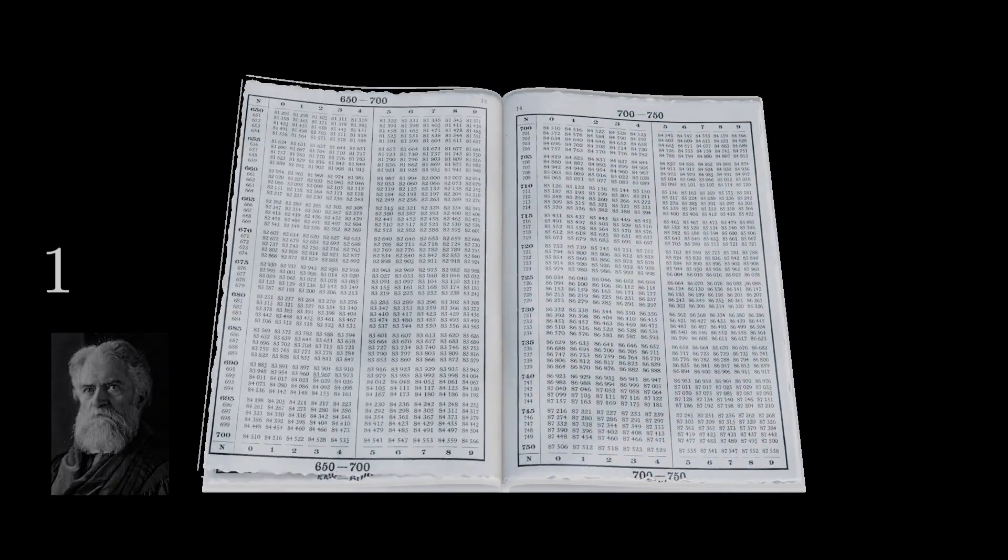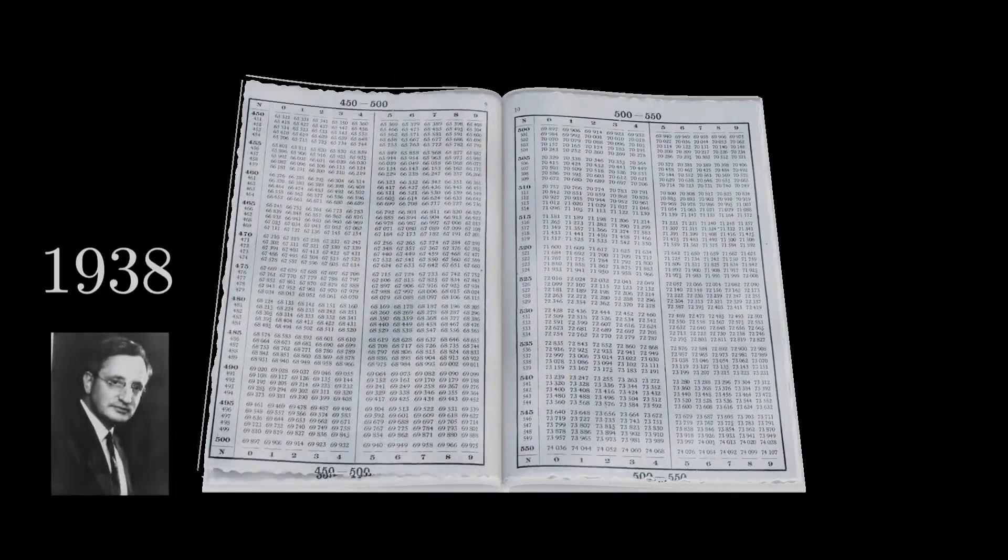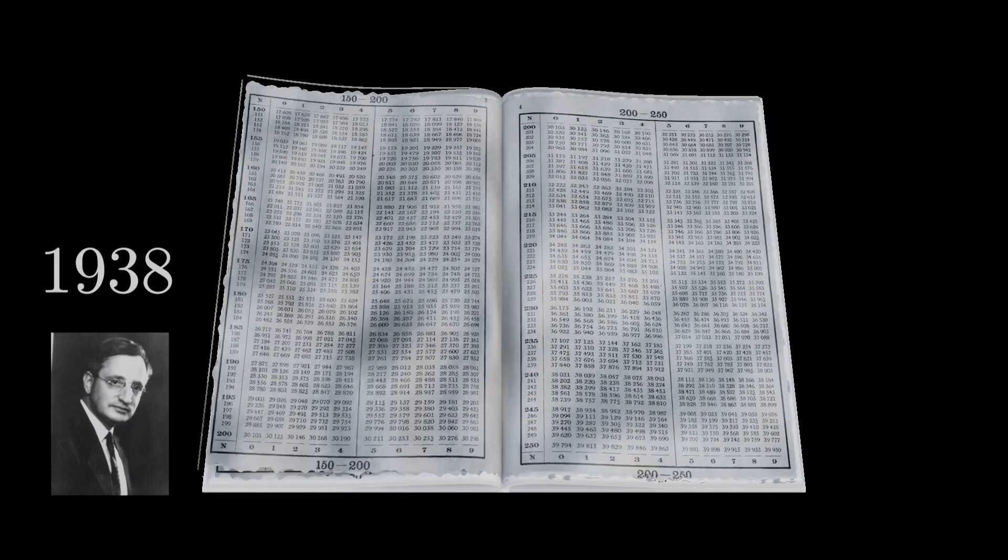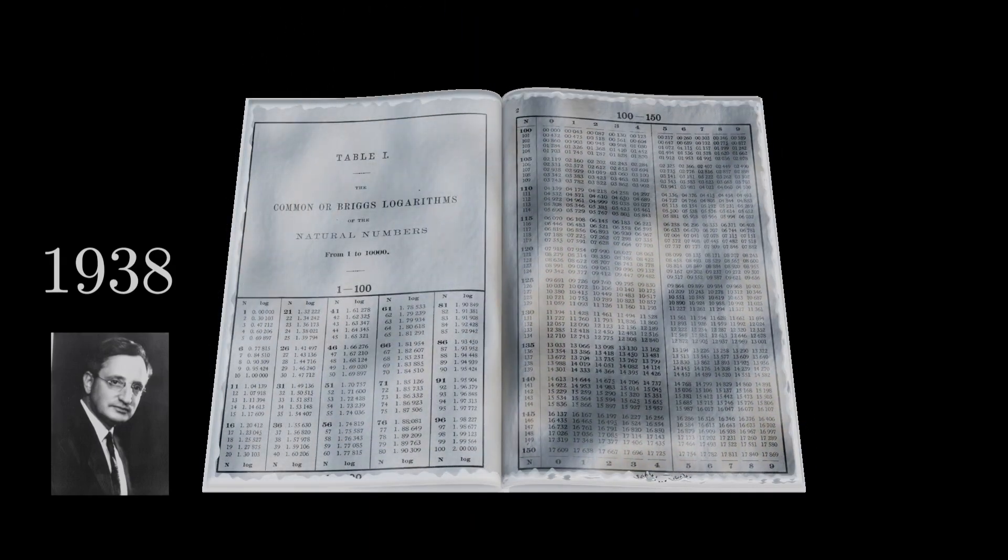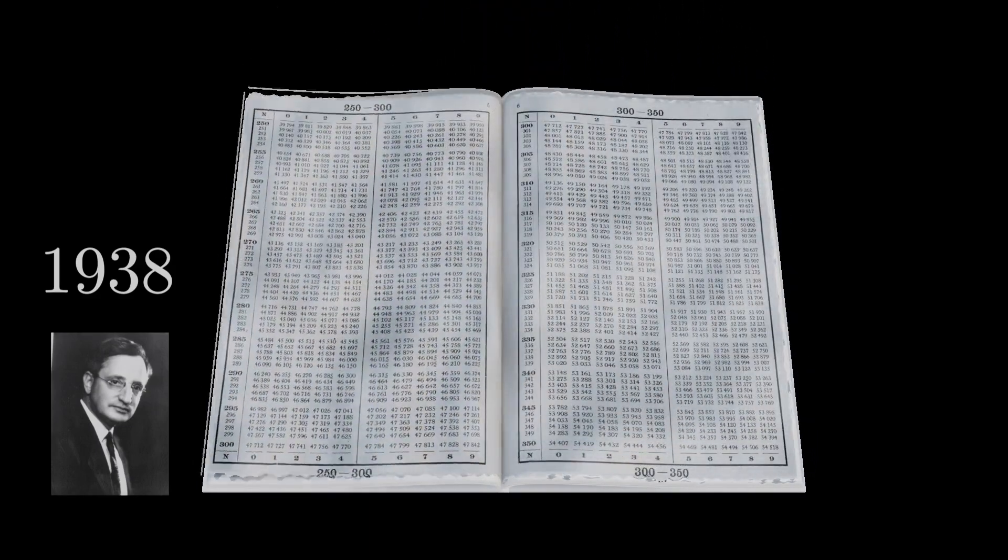It was rediscovered in 1938 by the physicist Frank Benford, who analyzed the data of hundreds of rivers, city populations, and molecular weights.